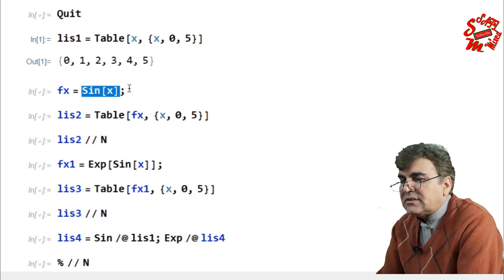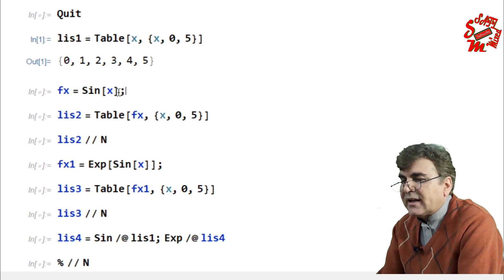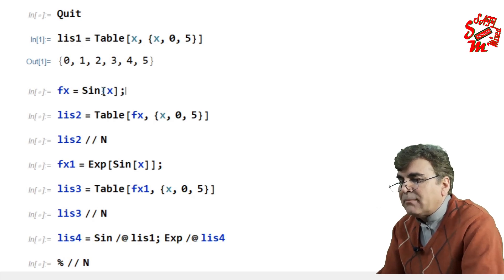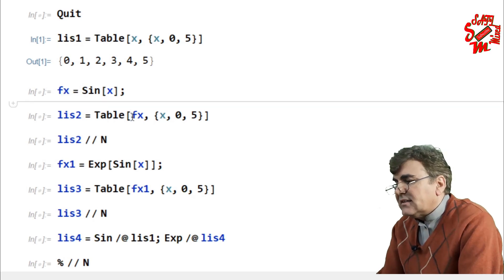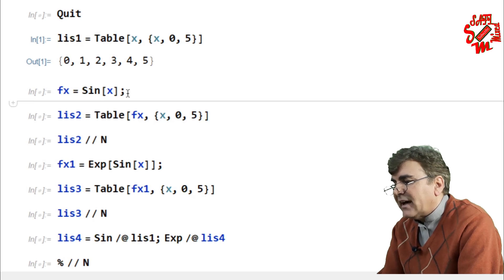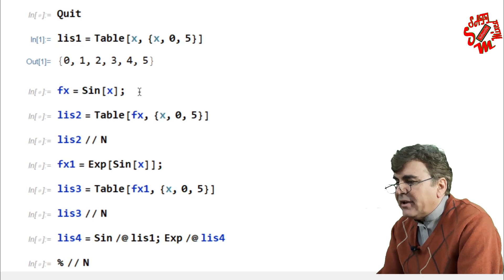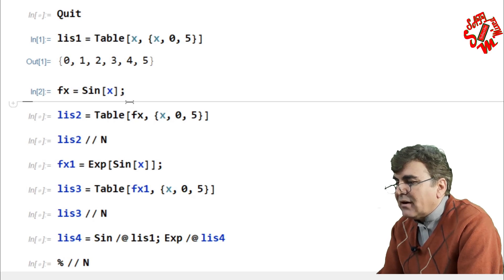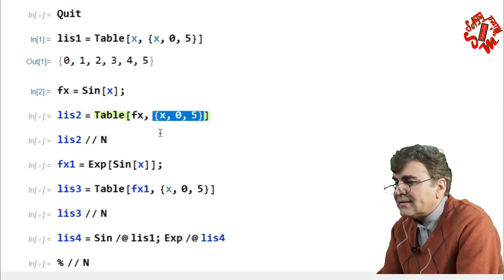The easy way which usually a beginner would prefer to do is to assign a name to the function and then make a table against the desired values of the list. In this case I have assigned fx to the desired function sine of x where x could be any element of the list. So what I do I just make a table of the function for the same values of x like in this case.